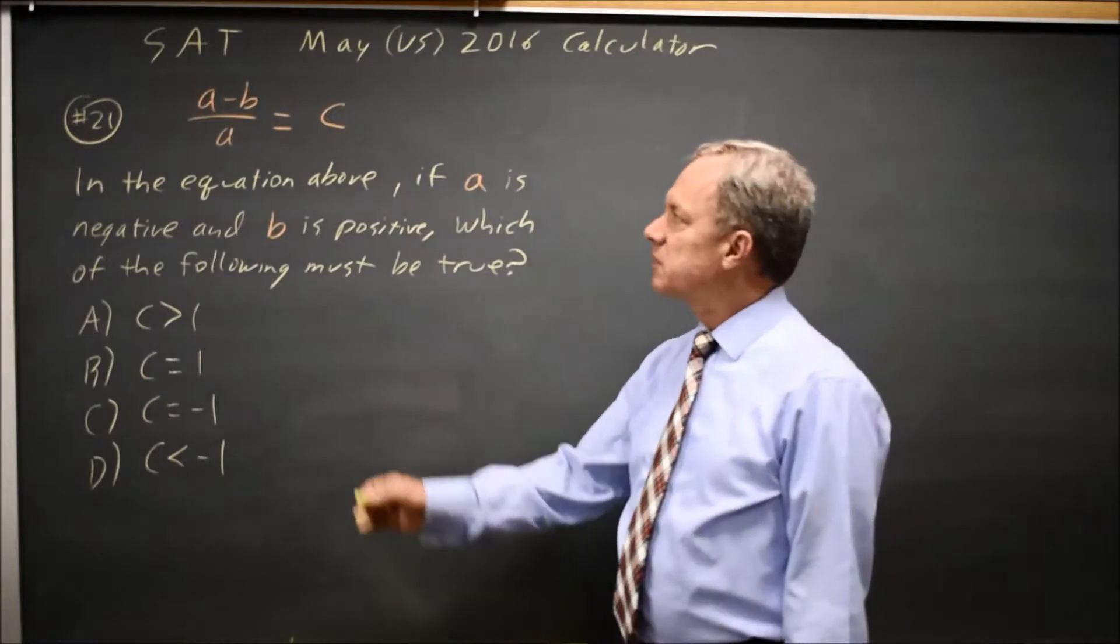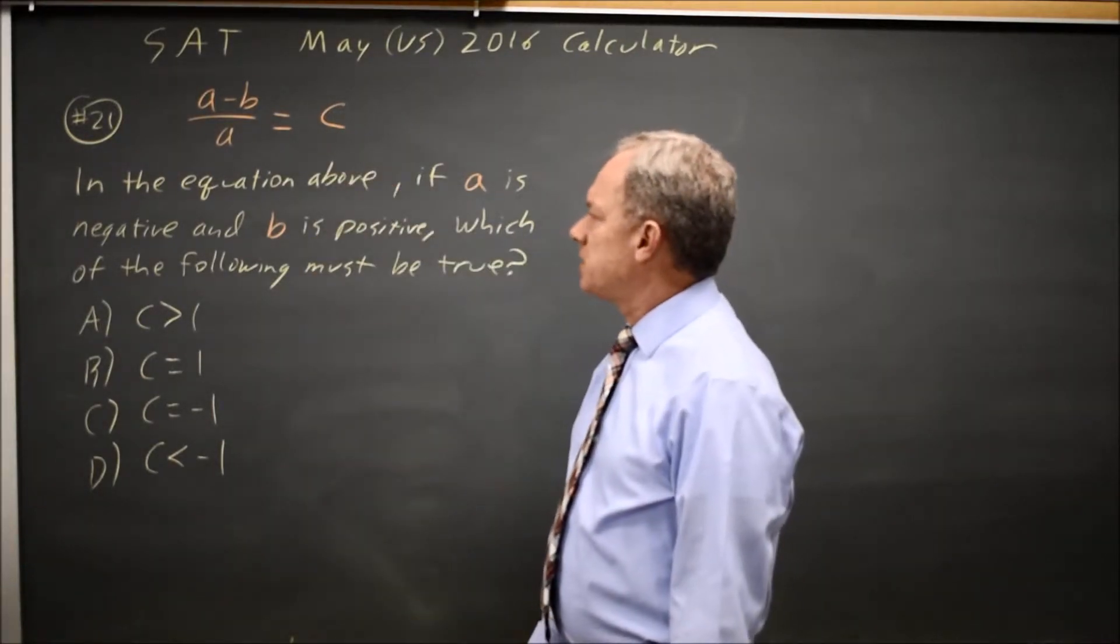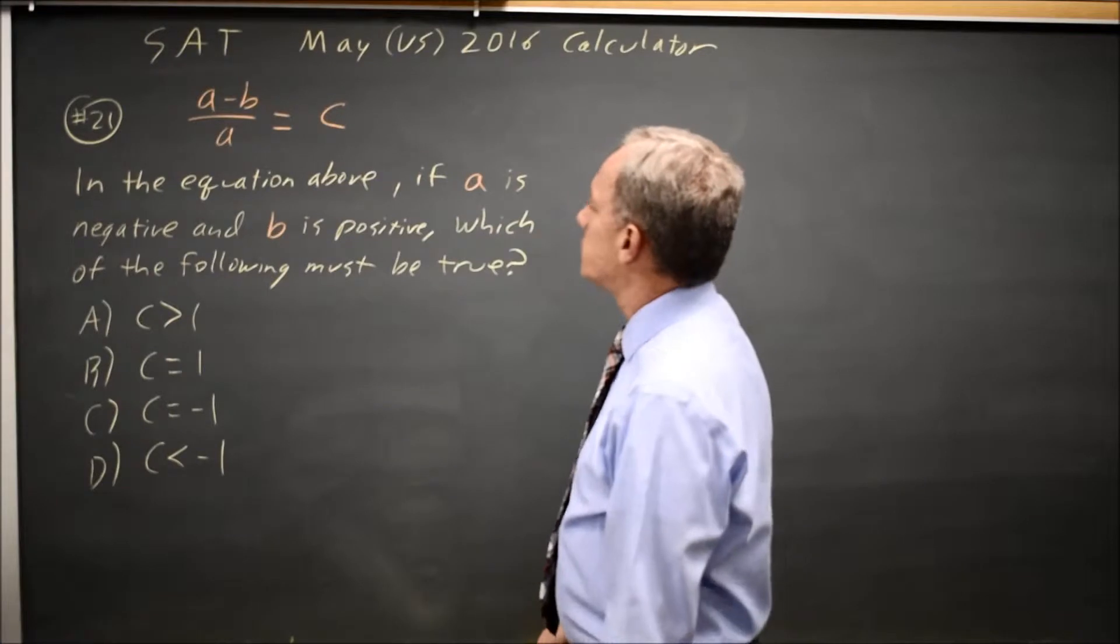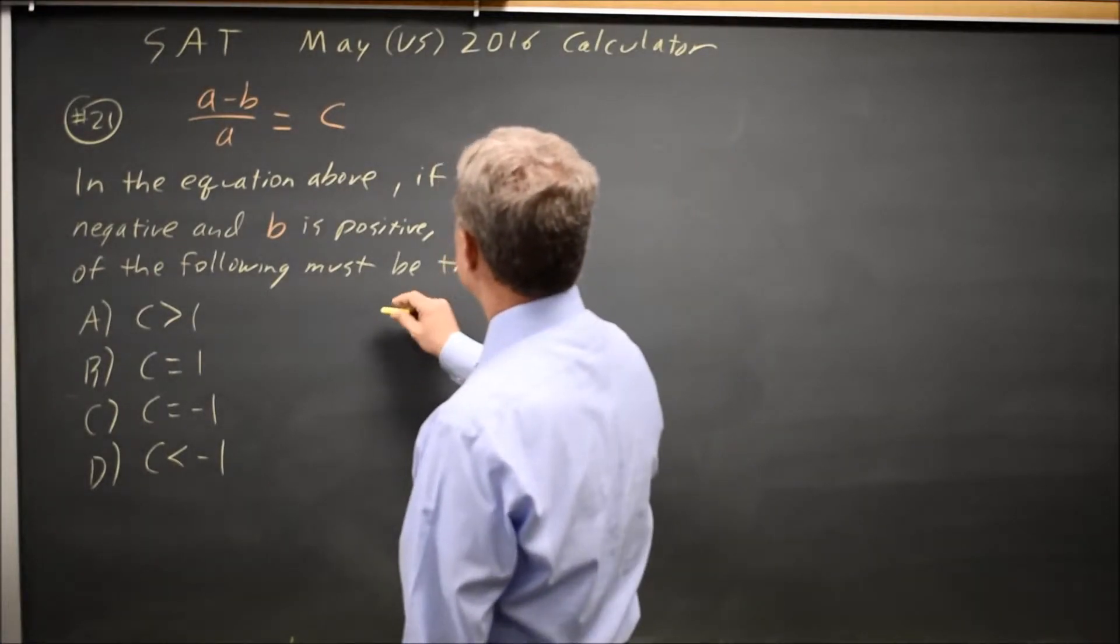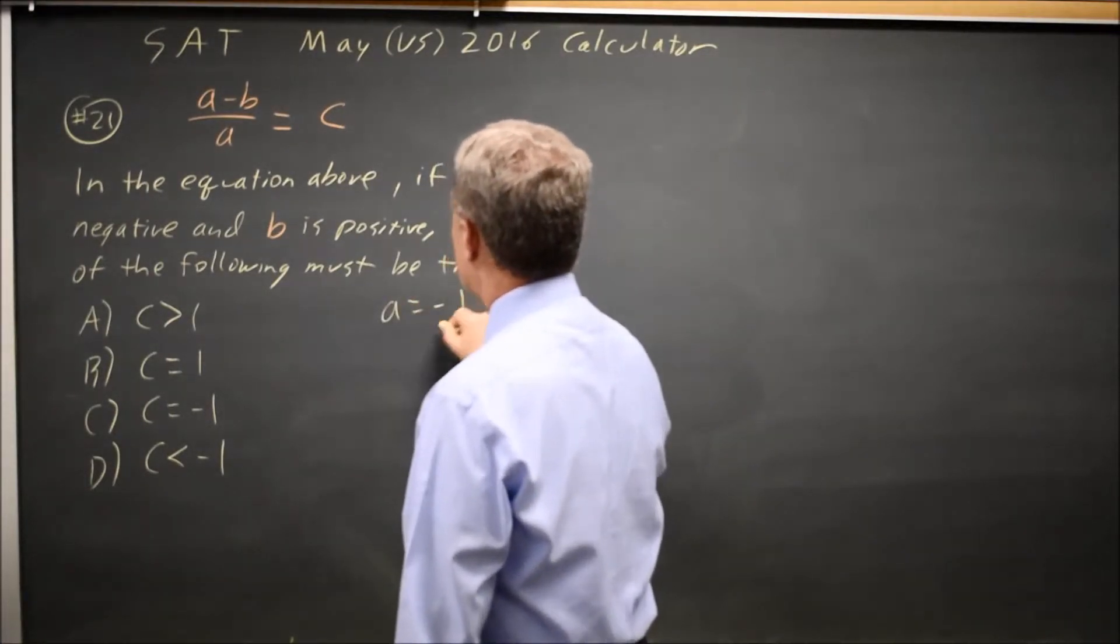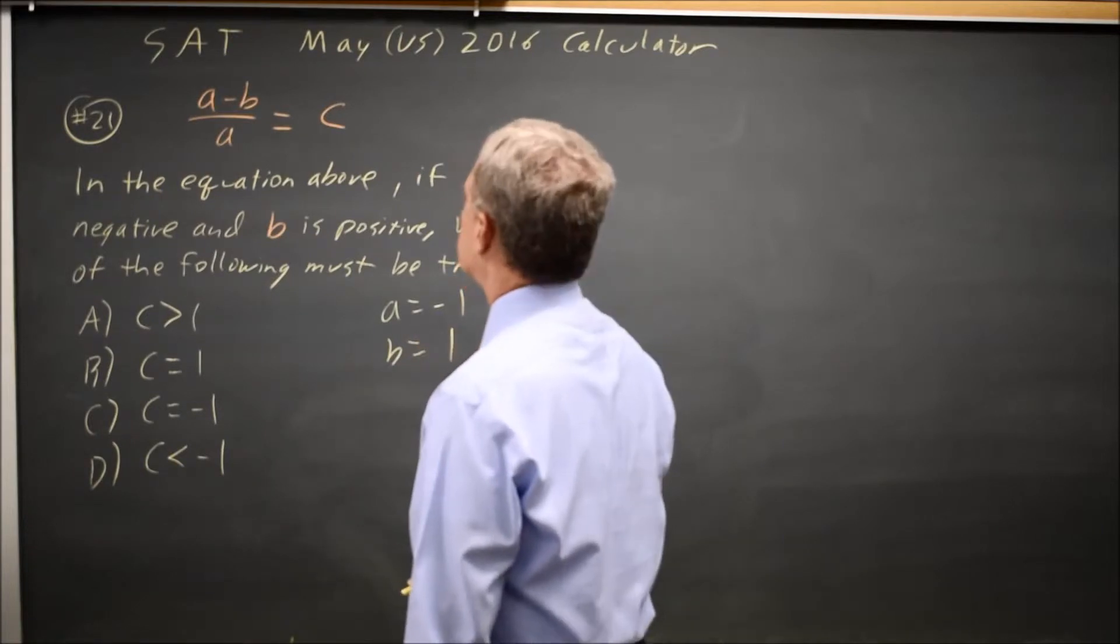College Board gives us an equation and asks if A is negative and B is positive, which must be true. So let's choose some values. How about A equals negative 1, B equals positive 1.